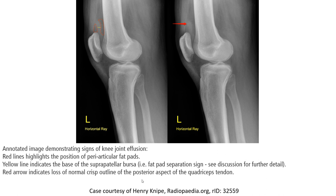This annotated image demonstrates signs of knee effusion. The red line highlights the portion of the pre-femoral fat pad, and the yellow line indicates the base of the effusion.